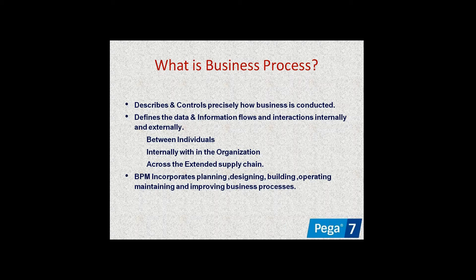For example, if you open a banking application, you are the people connecting to the application. Within the application there are many third-party applications — for example, payment sites contain many third-party applications. Business process manages all these connections internally within the application. It incorporates planning, designing, building, operating, and maintaining the business process.